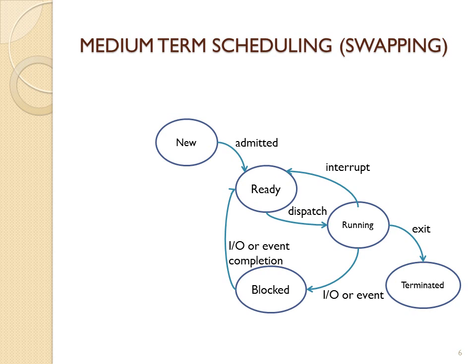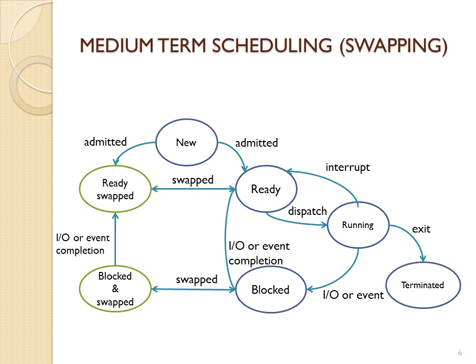Here is the diagram of the medium-term scheduler or swapping. In the state diagram, processes can be in the state of ready — waiting for the CPU — running, which is executing, or blocked, which is in I/O. With swapping, additional states are added: a process could be ready-swapped, meaning it's ready for the CPU but is swapped out to free resources for more important tasks, or it could be blocked and swapped out while in I/O.